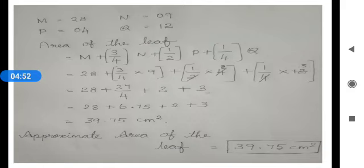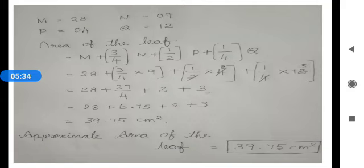Place the values in the following formula. Area of the leaf is calculated using the formula: M plus three-fourths N plus half P plus one-fourth Q. Placing the values M, N, P, Q, I got the answer 39.75 cm². So, the approximate area of the leaf is 39.75 cm².